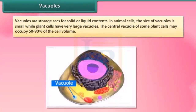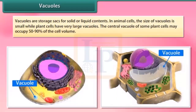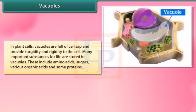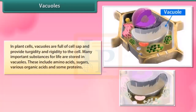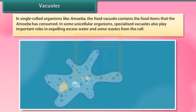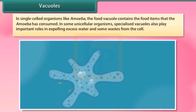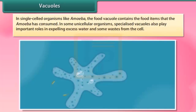Vacuoles are storage sacks for solid or liquid contents. In animal cells, the size of vacuoles is small, while plant cells have very large vacuoles. The central vacuoles of some plant cells may occupy 50–90% of the cell volume. In plant cells, vacuoles are full of cell sap and provide turgidity and rigidity to the cell. Many important substances for life are stored in vacuoles, including amino acids, sugars, various organic acids and some proteins. In single-celled organisms like amoeba, the food vacuole contains the food items consumed. In some unicellular organisms, specialized vacuoles also play important roles in expelling excess water and wastes from the cell.